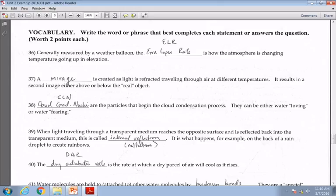For thirty-eight, I was after cloud condensation nuclei, or CCN, as those little pieces of dirt that kind of get water vapor to go ahead and liquefy. Question thirty-nine, I was after internal reflections. That's the little girl in the swimming pool sort of thing. Question forty, I was after dry adiabatic rate, how a chunk of air cools as it rises.